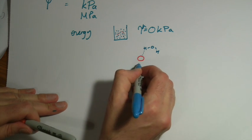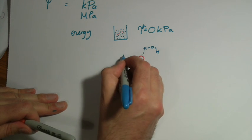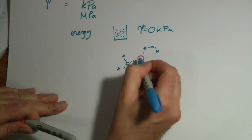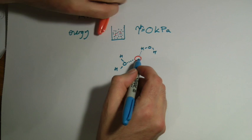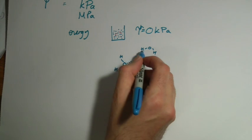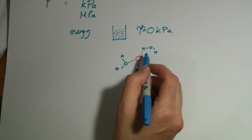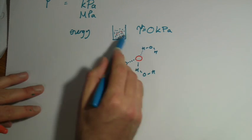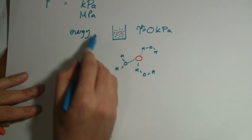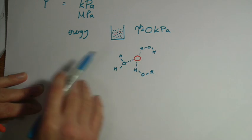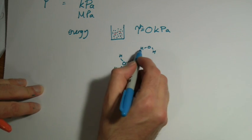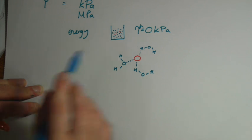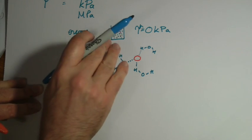These weak bonds that water can form will form between the particles or the ions, whatever it is we're dissolving, and the water. Now, bonds hold energy. Whenever we're making new bonds, some of that energy is being taken out of the water and it's stored in those bonds. It's no longer available to use.